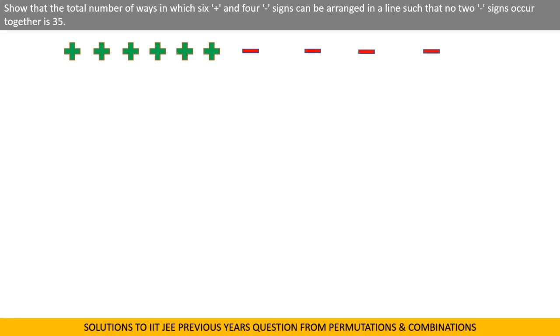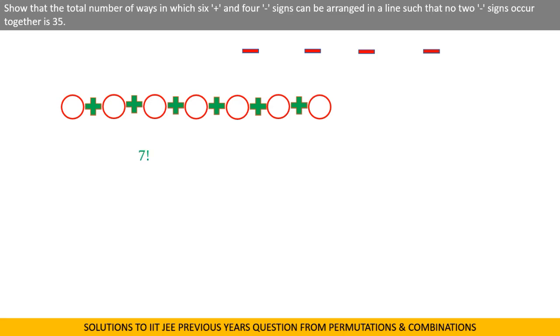In order to keep negative signs apart, we have to arrange positive signs in a row, keeping a gap on either side of positive signs. In this position, 7 positive signs can be arranged in 7 factorial ways.